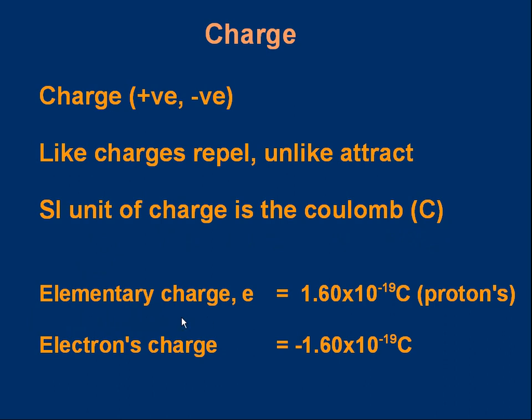And we define something called the elementary charge, which has got a symbol, small e. And the elementary charge is simply the charge on one proton. And in units of Coulombs, the charge on one proton, e, is to three significant figures, 1.60 times 10 to the minus 19 coulombs. That's a charge on one proton. That's a figure comes up over and over again. Eventually, you'll learn it off by heart. The electrons charge is the same magnitude, but it's negative. So the charge on the electron is minus 1.60 times 10 to the minus 19 coulombs, to three significant figures.